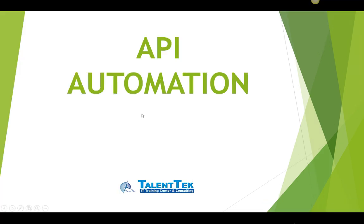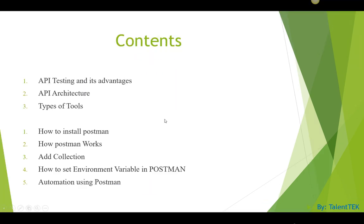Let's talk about the API automation. What are the things we're going to be talking about today? The first thing is what API testing is, and the advantages of doing API testing, and the architecture of the API, and the types of tools available in the market for API testing. Then what is Postman, how Postman works, what is a collection in Postman, what are variables in Postman, how to do testing in Postman — because we're going to do the demo in Postman — and why we choose Postman for API automation testing.